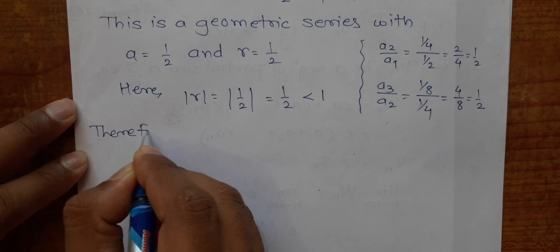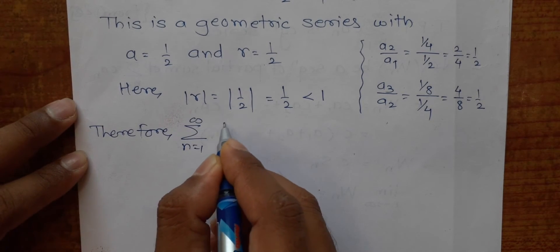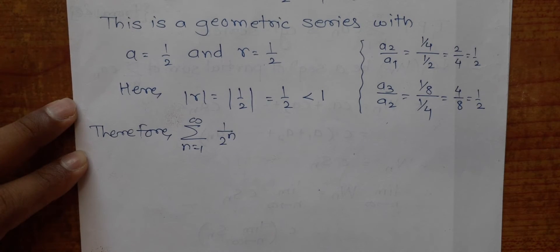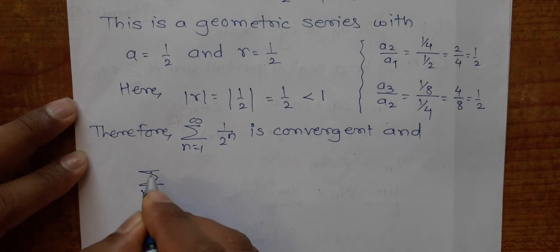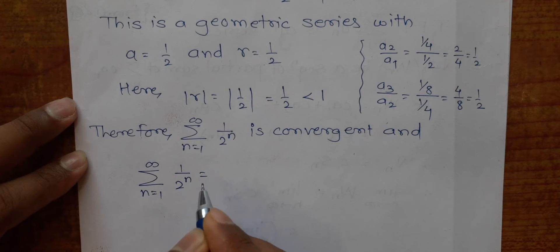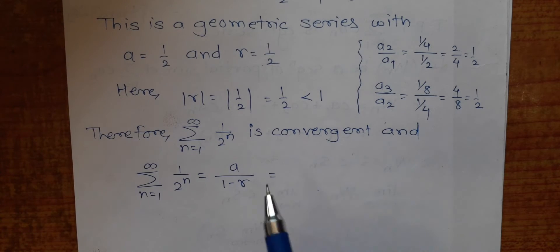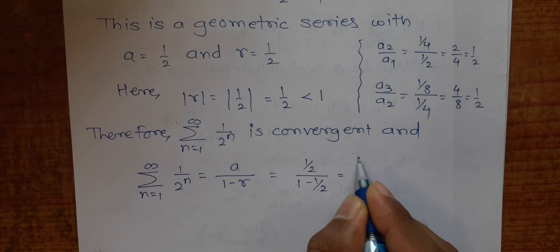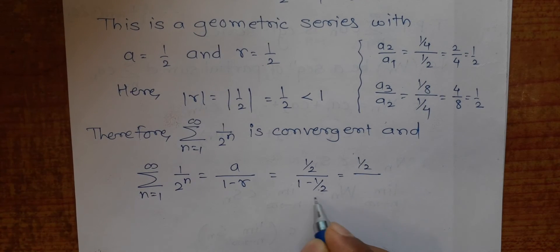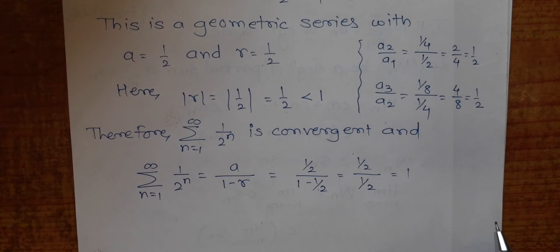Therefore, ∑(n=1 to ∞) 1/2^n is convergent. The sum of a geometric series is a/(1-r). Substituting a = 1/2 and r = 1/2: sum = (1/2)/(1 - 1/2) = (1/2)/(1/2). Cross-multiplying, the 1/2 cancels and we get 1.